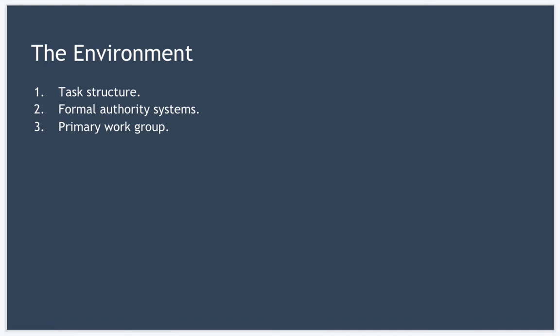So the final element is primary work group, and this refers to the level of support the subordinate receives from the people around them, the people they work alongside. And if a subordinate doesn't receive much support from their colleagues then a supportive leadership style can be very appropriate.